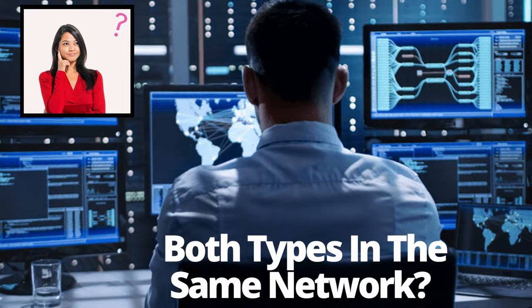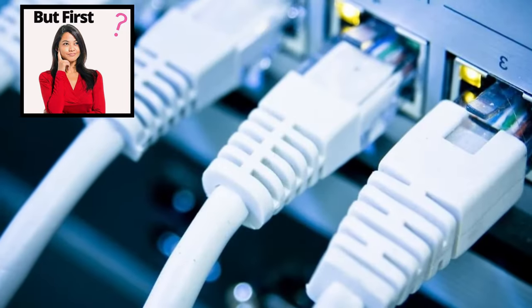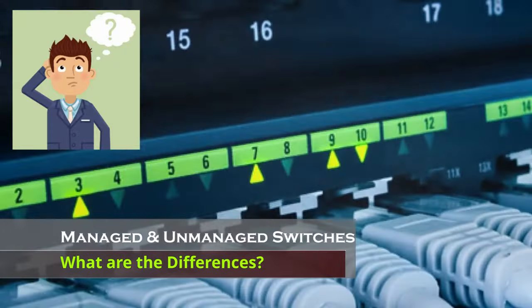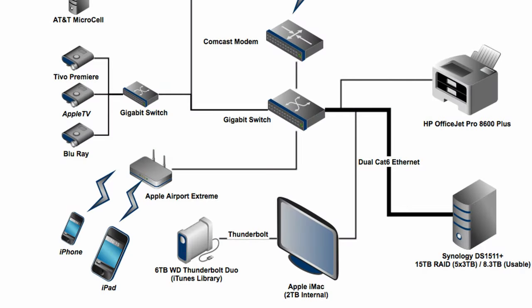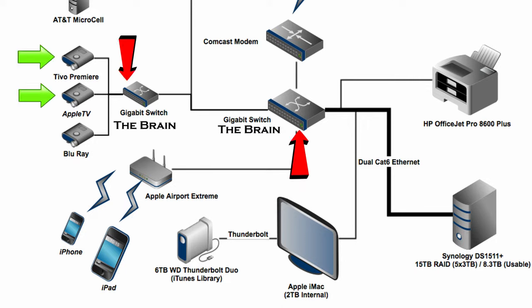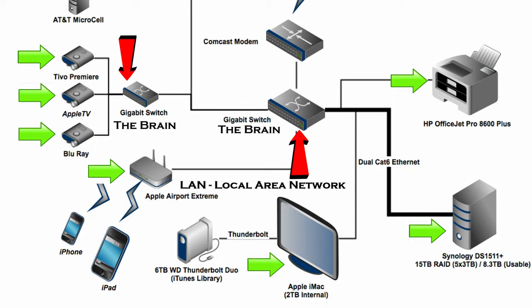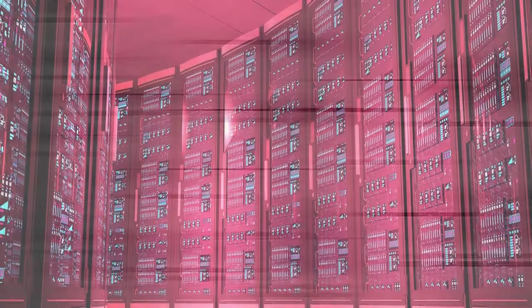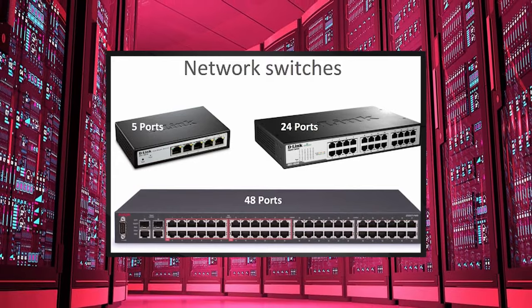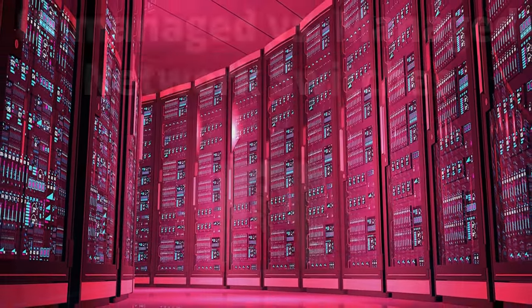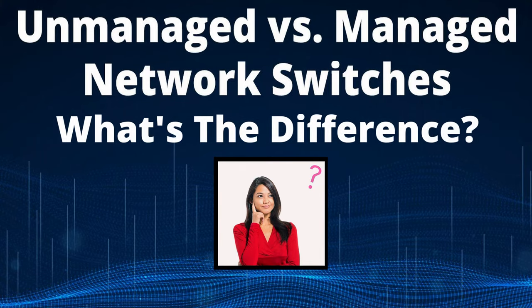Before we answer those questions, we need to cover the differences between a managed switch and an unmanaged switch. When designing your home network, a network switch is effectively the brain of your network. These switches connect all devices together on a LAN — local area network — constantly redirecting and forwarding data to the correct destination. Network switches come in various sizes and can have up to 48 ports.